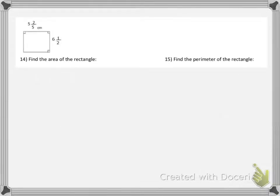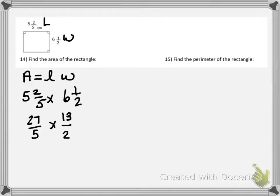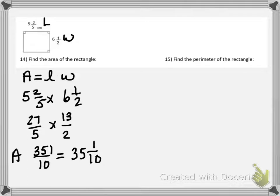Now we're looking at a rectangle. To find the area, we multiply the length times the width. The length is 5 and 2 fifths and the width is 6 and 1 half. We change those to improper fractions: 5 and 2 fifths is 27 fifths (5 times 5 is 25 plus 2 is 27), and 6 and 1 half is 13 halves (2 times 6 is 12 plus 1 is 13). Multiplying across: 27 times 13 gives 351, and 5 times 2 is 10. As a mixed number, 10 goes into 351 thirty-five times with remainder 1. So our area is 35 and 1 tenths centimeters squared.